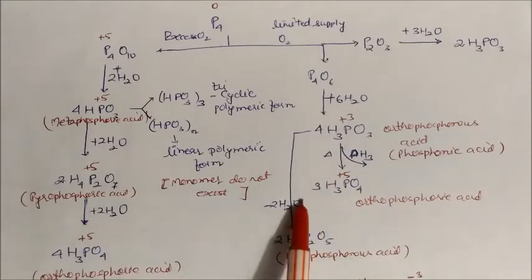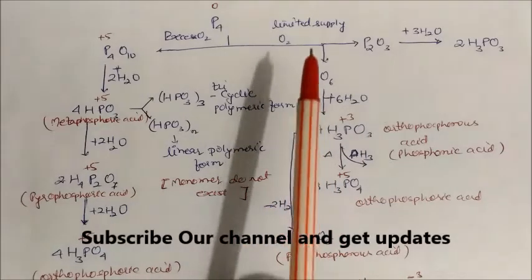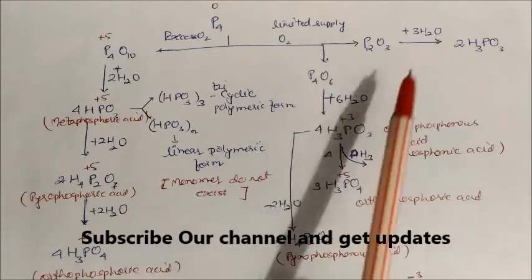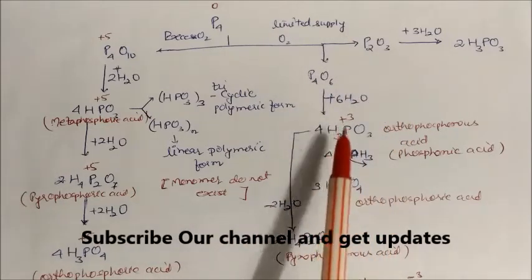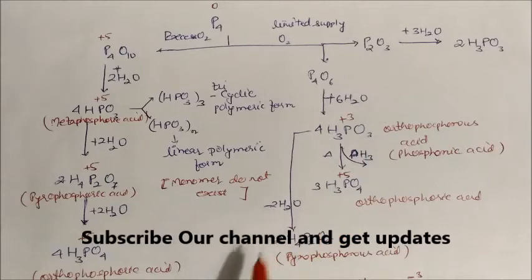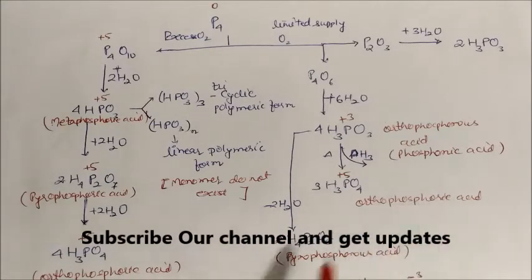The formula for pyrophosphorus acid is H₄P₂O₅. You simply multiply four molecules and subtract two molecules of water to get this formula. So from the limited supply of oxygen pathway, we get two types of acids: orthophosphorus acid and pyrophosphorus acid.